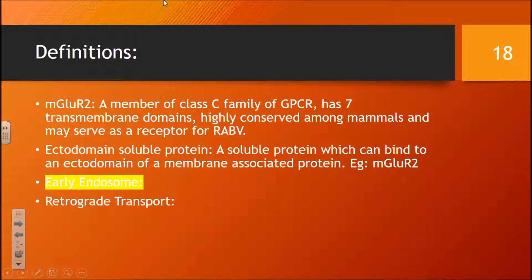Here are some key definitions. mGluR2 is essentially a G-protein coupled receptor. An ectodomain soluble protein is a protein that can bind to the ectodomain of a transmembrane protein. Retrograde transport is basically the transportation from the nerve terminal to the soma of the neuron.